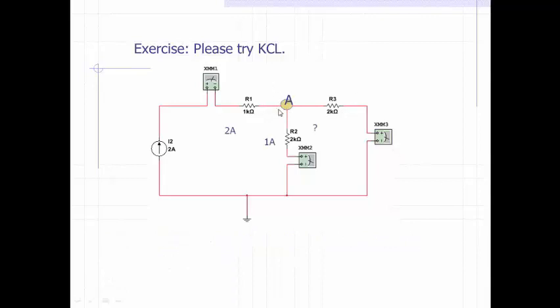Let's first define this node as node A. Three branches are connected to this node: two amperes in, and two other currents leaving. One of them is one ampere, so how about this current? Based on KCL, the total current in - two amperes - is equal to the total current leaving the node. From this equation, you can solve that the unknown current should also be one ampere.